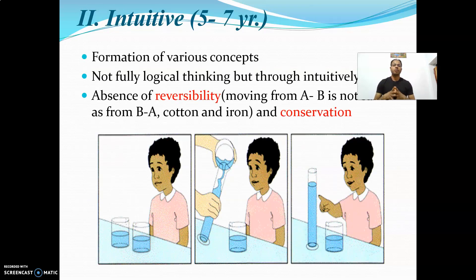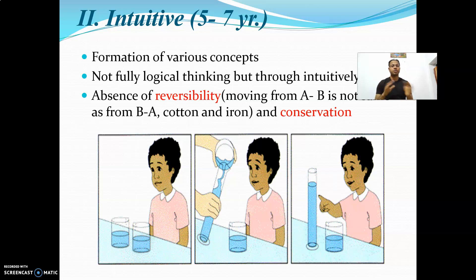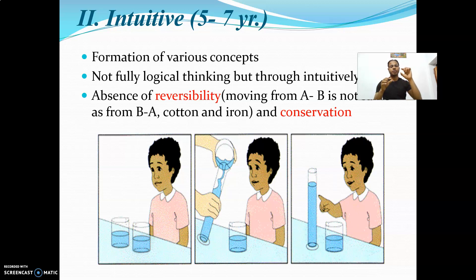In the intuitive phase, reversibility is absent, as is conservation. If a person moves from A to B, the child will not believe the distance from A to B is the same as B to A. Regarding conservation, if you put equal amounts of water into two glasses and then pour one into a narrow tube and ask the child which has more water, the child will say the narrow tube has more water.